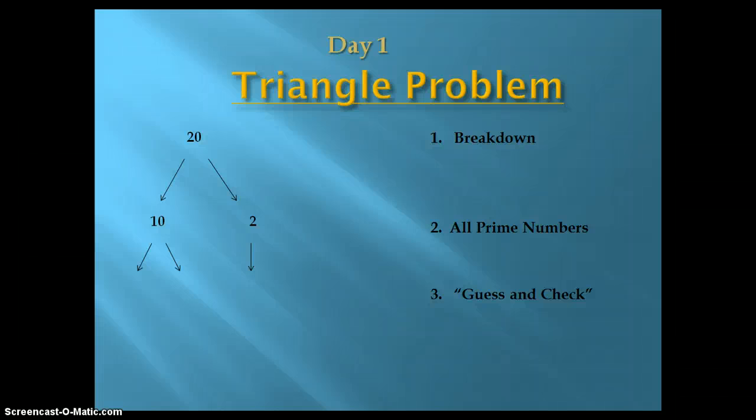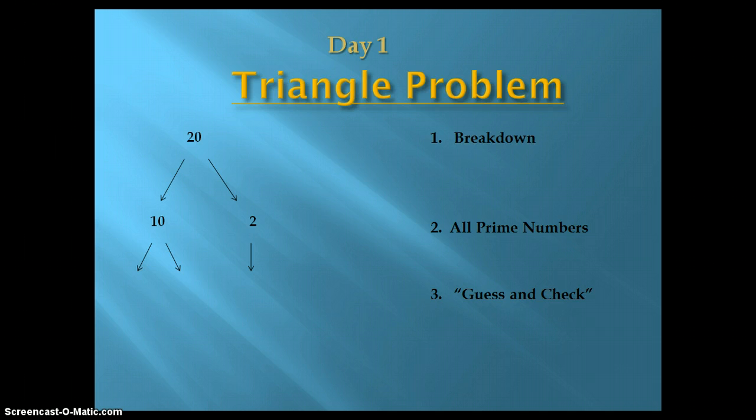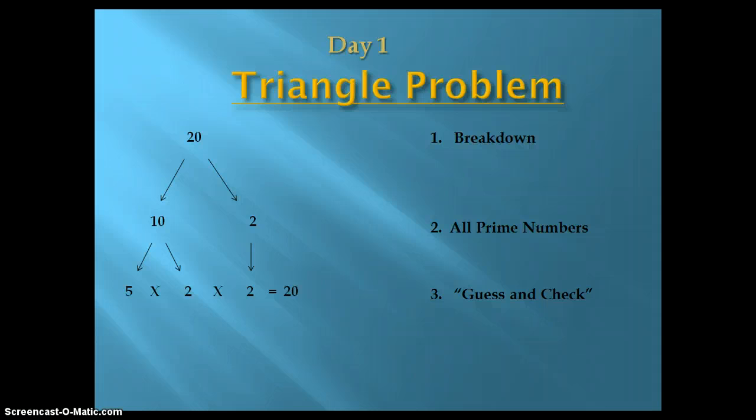Now, back to the equation. Now that we have found the multiplication with the sum of 20, we have to continue breaking 10 down until no more numbers can be broken down. Finally, after breaking 10 down into 2 and 5, our answer is 5, 2, and 2.